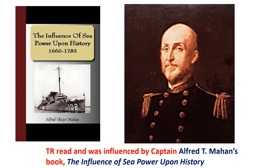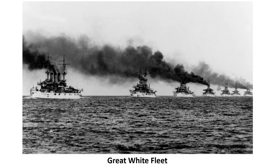Roosevelt wanted to build a canal across the isthmus of Panama, but the country of Colombia, which controlled it, wouldn't strike a deal. Not surprisingly, Roosevelt encouraged the Panamanians to revolt and used the Great White Fleet to intimidate the Colombians. When Panama claimed independence, T.R. recognized the new nation and struck a deal with the new government that strongly favored the Americans. The United States quickly went to work building the canal — quite a project for its time. Hundreds died building it, it used more concrete than ever before, and at the time had the world's largest electric generators to move the locks.